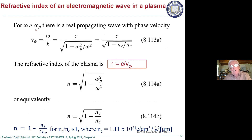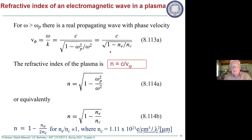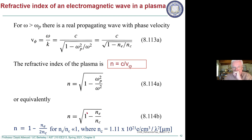If omega is greater than omega_p, there is a real propagating wave, and it has a phase velocity you can compute from the dispersion relationship. You can write the dispersion relationship in terms of the electron density over the critical electron density, and you get a refractive index n, defined as c over v_phase. This is the refractive index of a plasma in general.